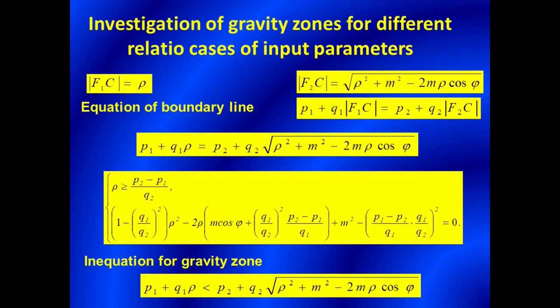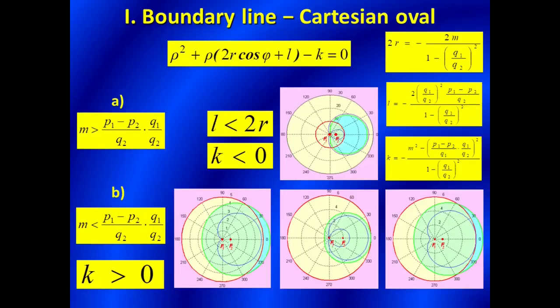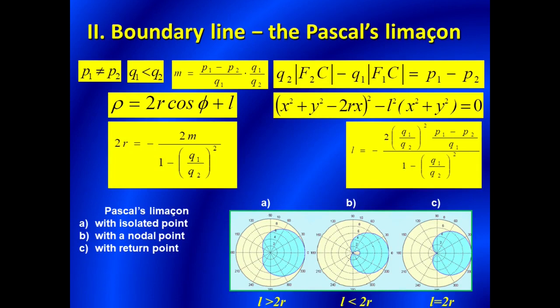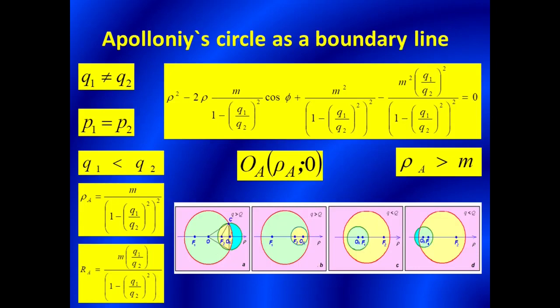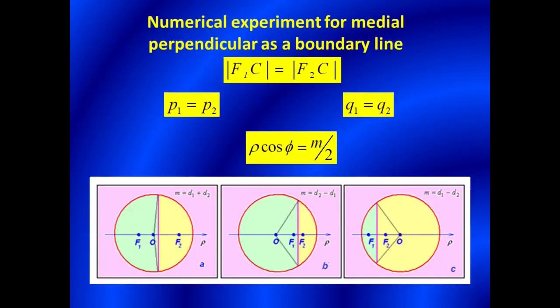Depending on different relations between input parameters, the boundary line can be a Cartesian oval, a Pascal limaçon, a hyperbola branch, an Apollonius circle, or a medial perpendicular.